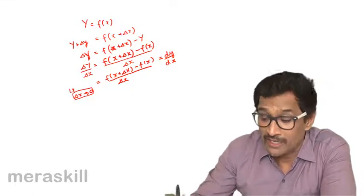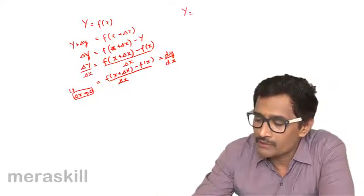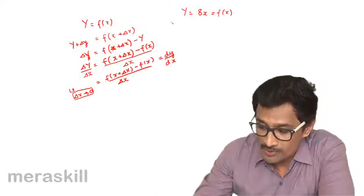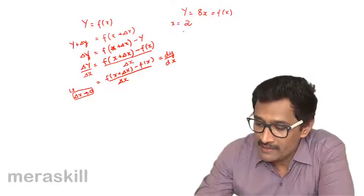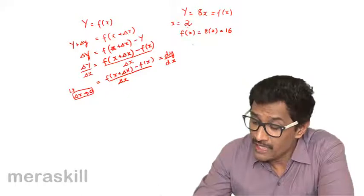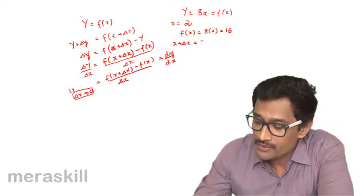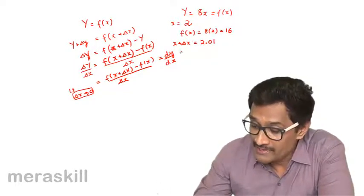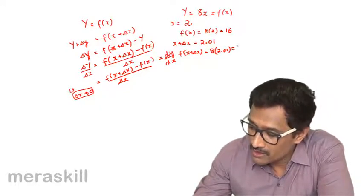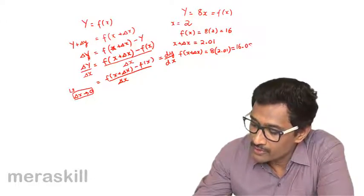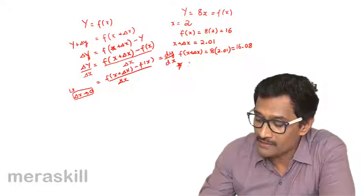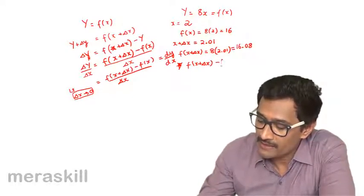To explain this, let's take a particular function: y equals 8x, which is the same as f of x. Suppose x is equal to 2; then f(x) equals 8 times 2, which is 16. Now suppose x plus delta x is 2.01; then f(x + delta x) equals 8 times 2.01, which turns out to be 16.08. So the change in the value of y — that is f(x + delta x) minus f(x) — is 16.08 minus 16.